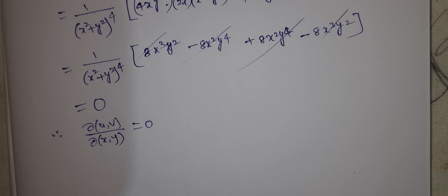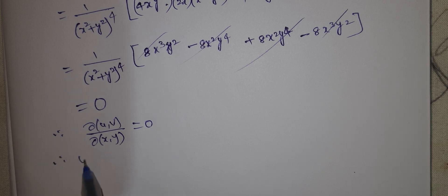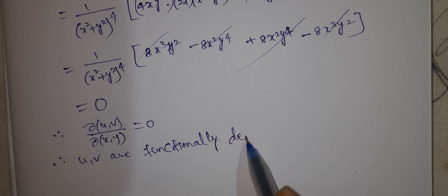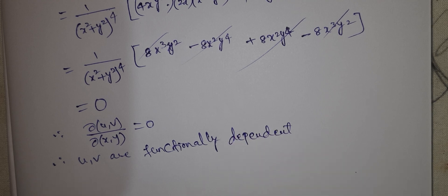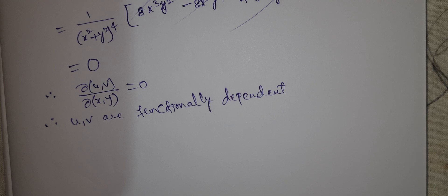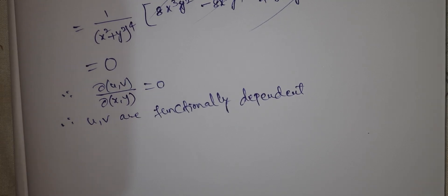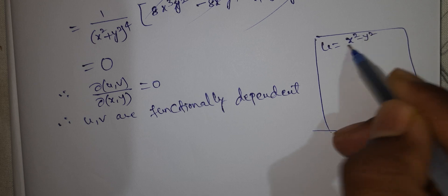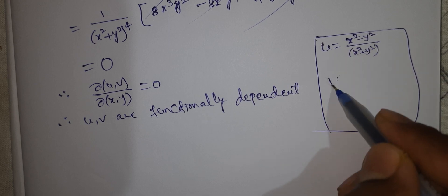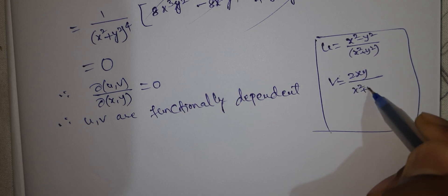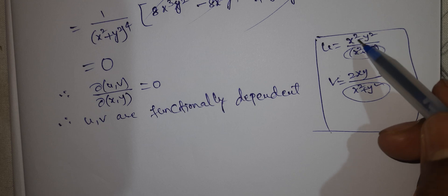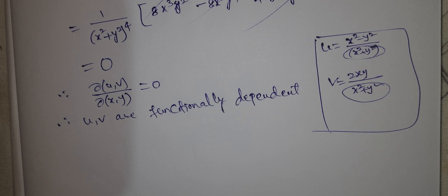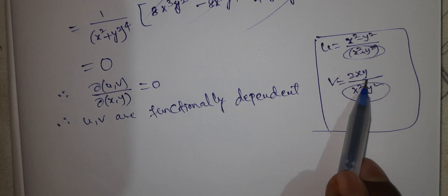So the functions are functionally dependent. Now we find the relation between them. We have u = (x² - y²)/(x² + y²) and v = 2xy/(x² + y²), both with the same denominator. We use the algebraic identities: (a-b)² = a² - 2ab + b² and (a+b)² = a² + 2ab + b².